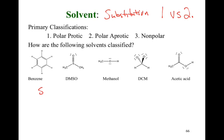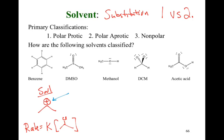Let's look at our SN1 mechanism. In our SN1 reaction, we're concerned about the formation of our carbocation, which means the rate is dependent solely on the concentration of our substrate. How is the solvent going to help us? What does the solvent do to a carbocation — can it stabilize or destabilize it? In an SN1 reaction, I want to form that carbocation — that first step is the hardest. If I make the carbocation more stable, my reaction speeds up; if I make it less stable, the reaction slows down.